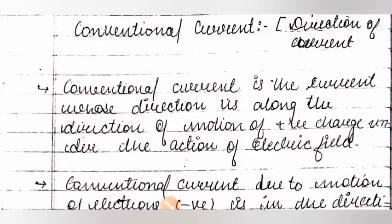The direction of current is along the motion of positive charges. When we provide a potential difference to a conductor, one end is at high potential and the other end is at low potential. Electrons move from negative to positive, because the positive potential attracts the negative charges.